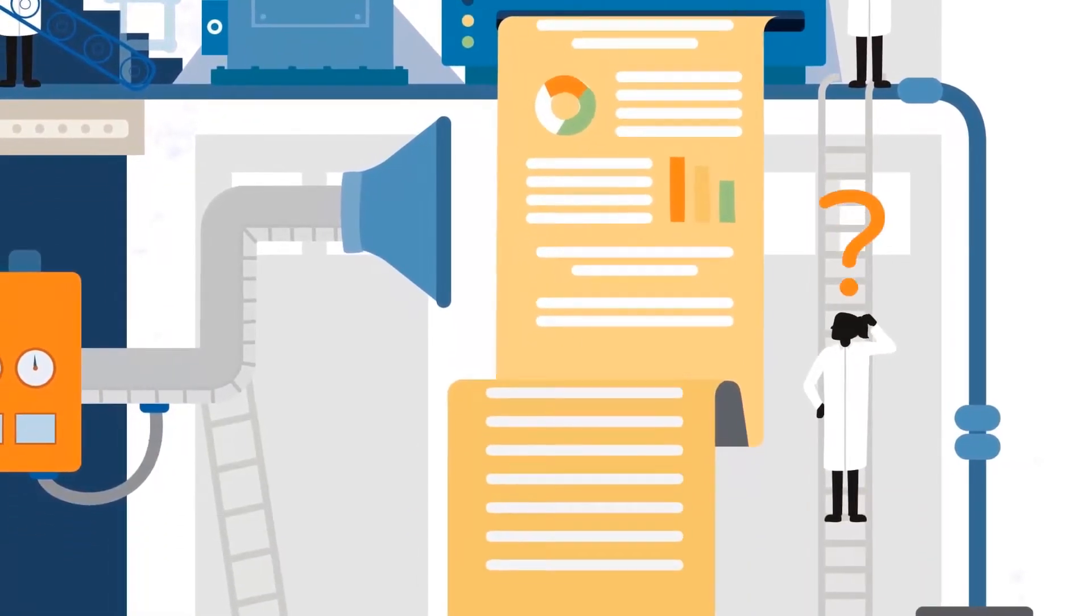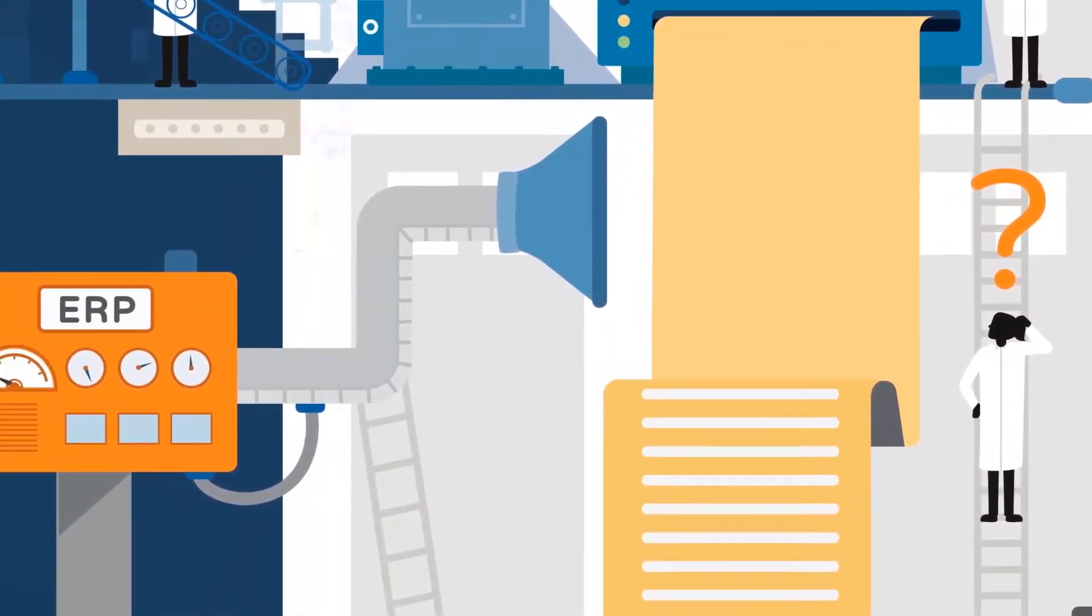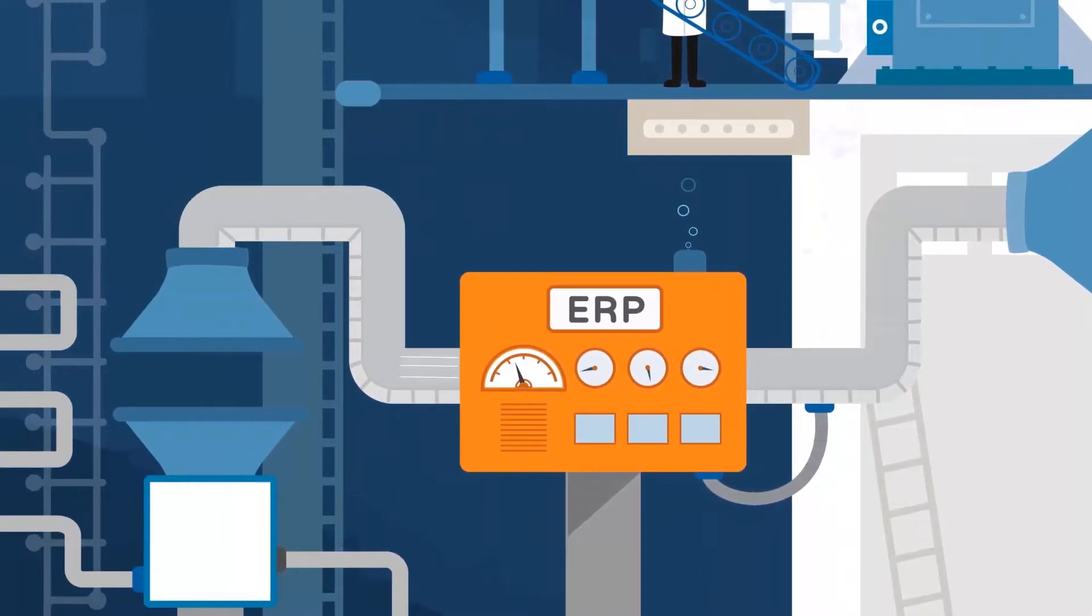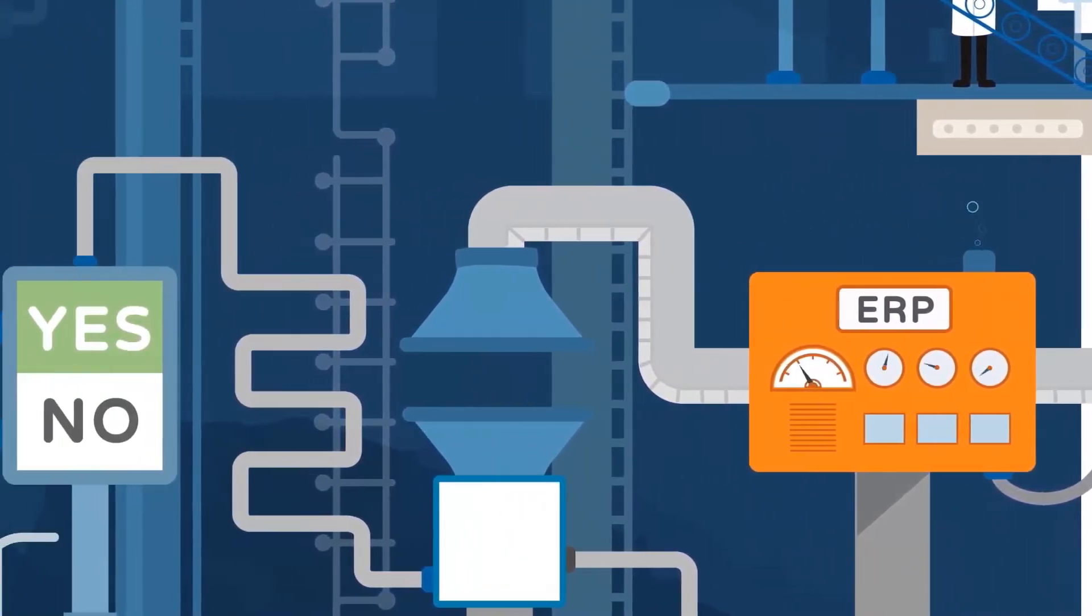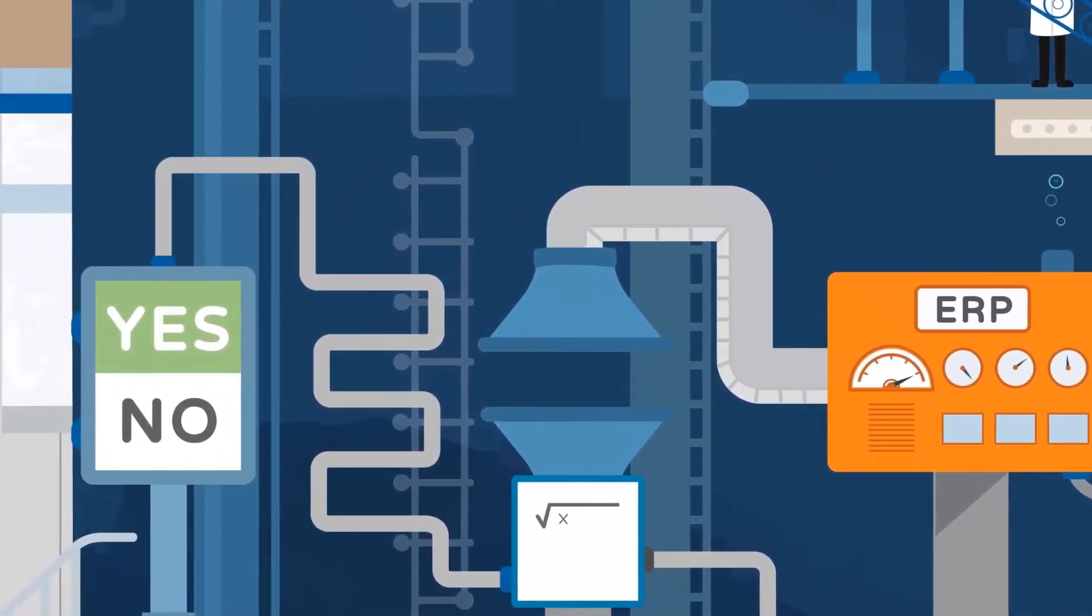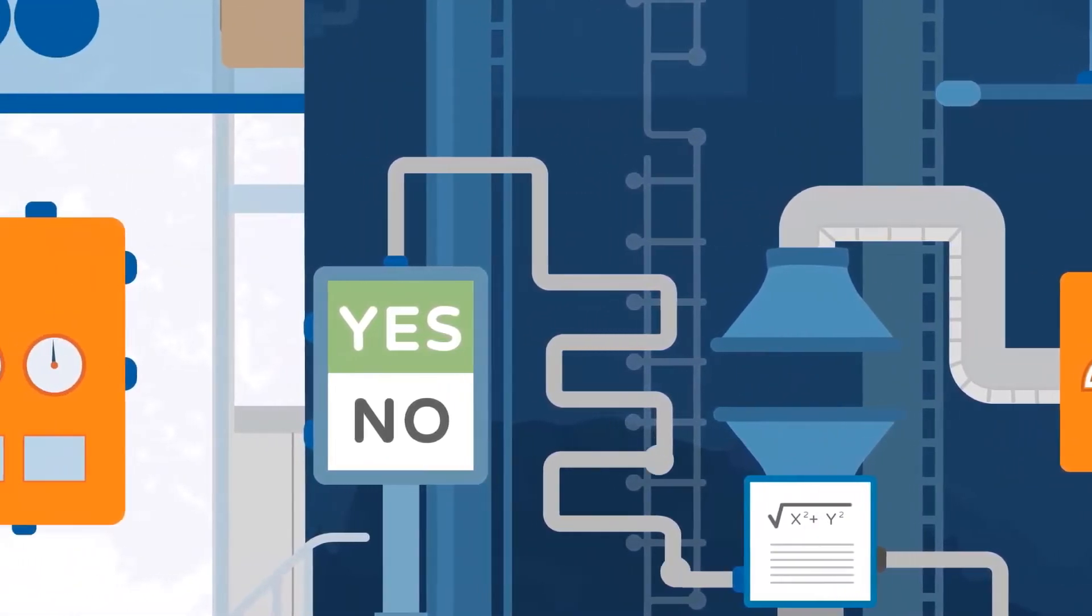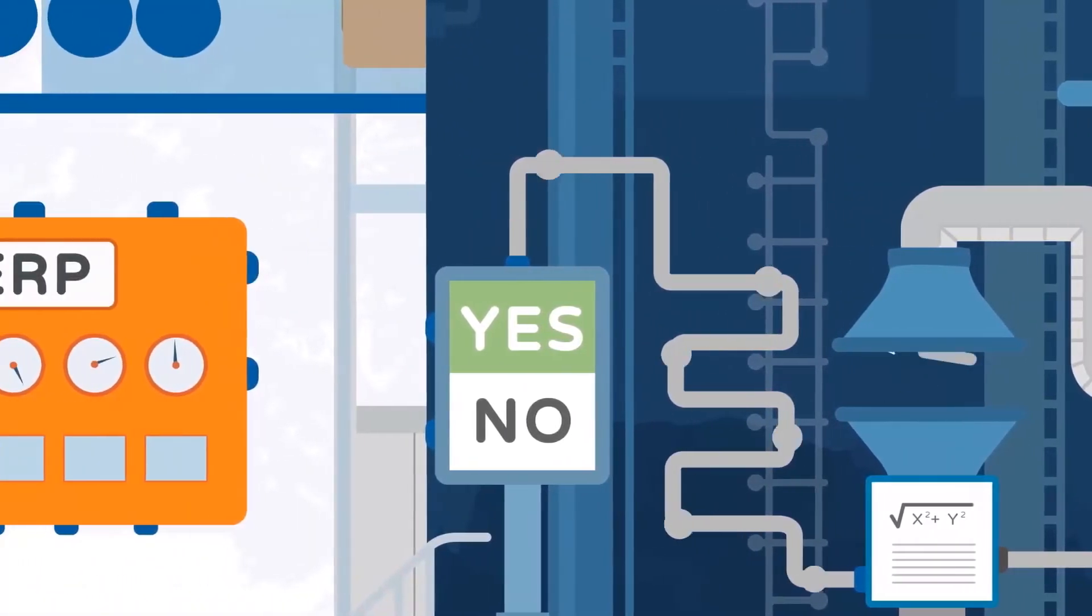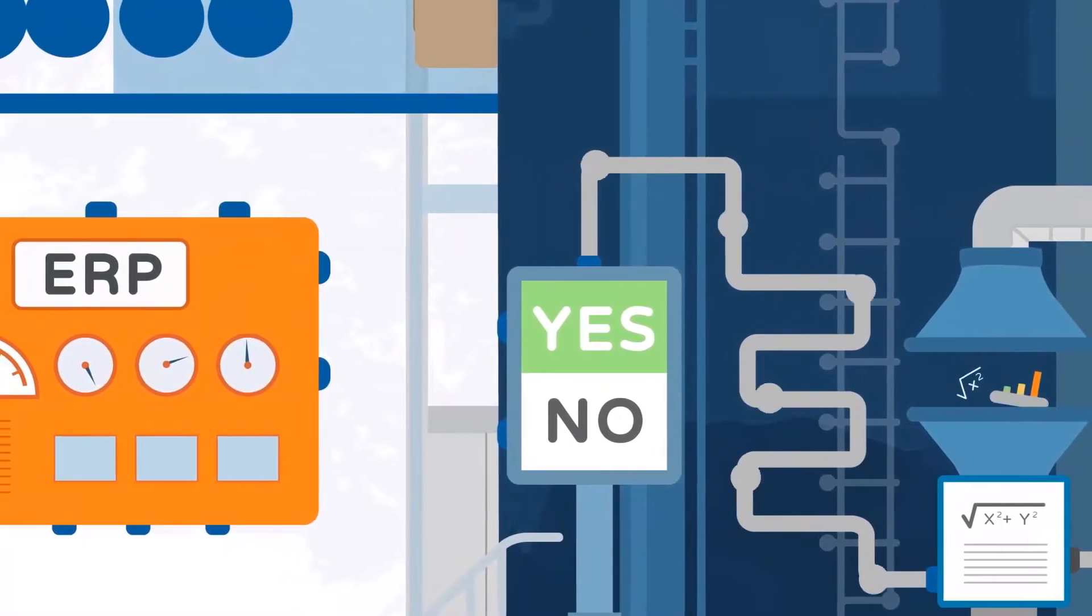But how do you make sense of all this data? For starters, a manufacturer's ERP system must have the ability to collect, filter and analyze data at critical points in the manufacturing process so that users can make better decisions based on insights from real data.